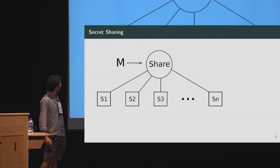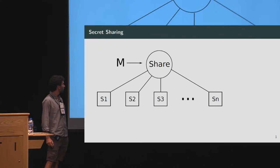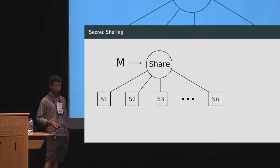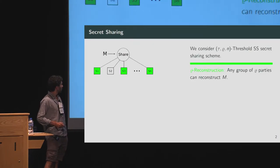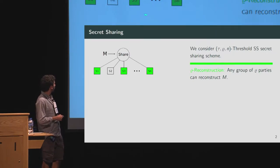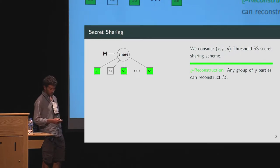This talk is about secret sharing, in particular about threshold secret sharing. A secret sharing is an object that allows you to take a secret message and share it, getting n shares s1 to sn. The two most important properties are rho-reconstruction, meaning every set of rho shares can join together and reconstruct the original message.